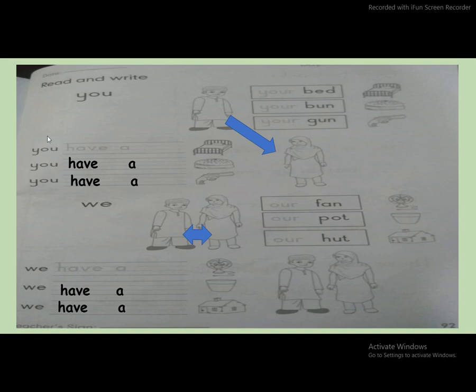Today, we learned 'you have' and 'we have' sentences. So, repeat with me. You have a bed. You have a bun. You have a gun. We have a fan. We have a pot. We have a hut.